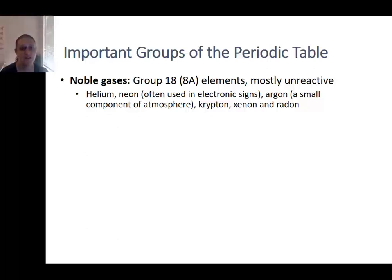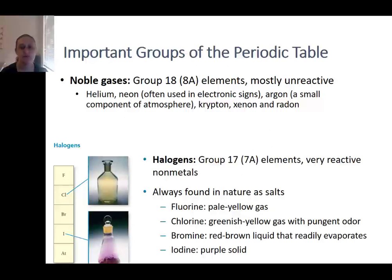Next to the noble gases are the halogens, which are the most reactive of the non-metals. They are so reactive that they are essentially never found in nature in their pure form. This includes elements like fluorine, chlorine, bromine, and iodine.